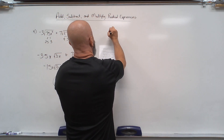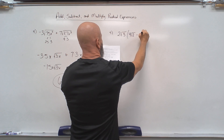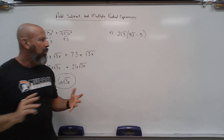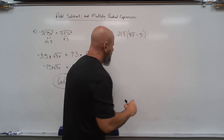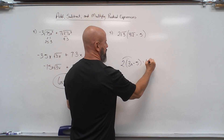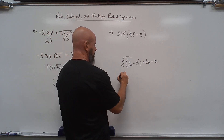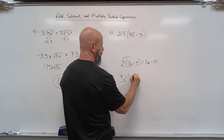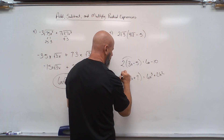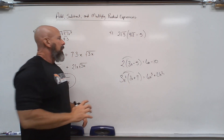Now multiplication. Multiplication just involves the distributive property. I've got a singular term, 2 root 3, times a binomial. We have done the distributive property many times — typically it looks like 2 times (3x minus 5), and I would distribute to get 6x minus 10. Same idea when I see radicals — it's still a distributive property, distributing that 2 root 3 to both terms.